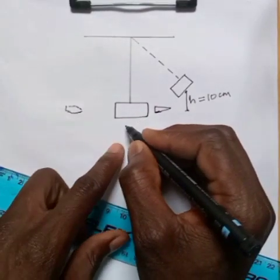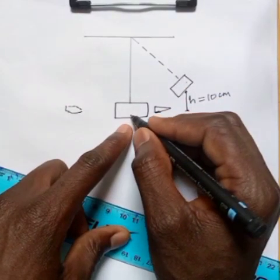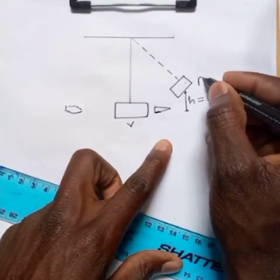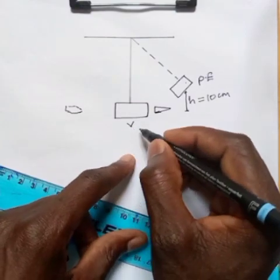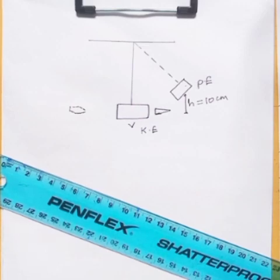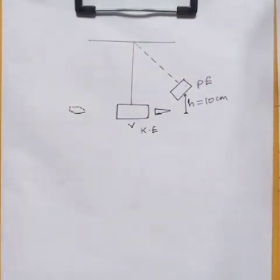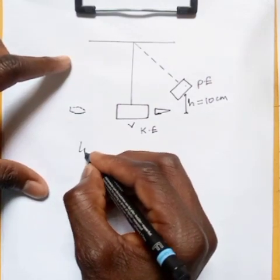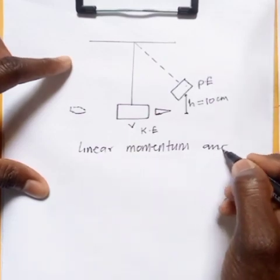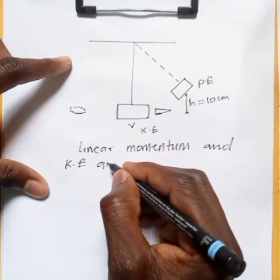Once the block reaches the top after moving from its initial point, it will have potential energy at the top and kinetic energy at the bottom — that's where it will have its final velocity. This type of collision is what we call an elastic collision, because the bullet entered the block and came out, meaning each particle started moving on its own. So linear momentum and kinetic energy are conserved.